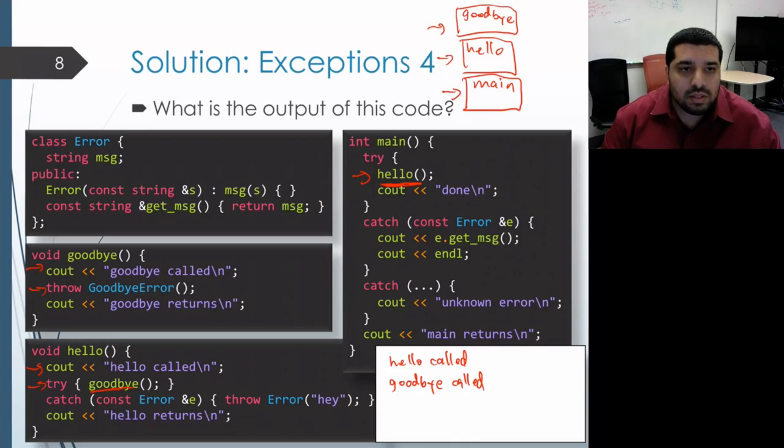However, the second one is a catch all, so it can handle any exception type. So it can handle a goodbye error, and execution proceeds to the body of that second catch. And that prints out unknown error.